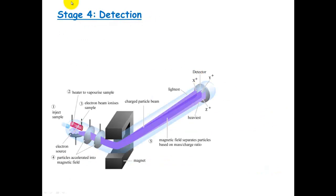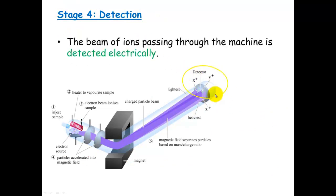And the last stage is detection. And this happens right at the end here. And basically, they're detected electrically, and you get a wave pattern that looks something like this, or they're called peaks. So a graph will come out, and you'll have the relative isotopic mass on the bottom and you'll have the relative abundance in that sample on the side.